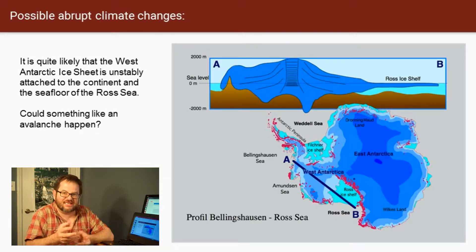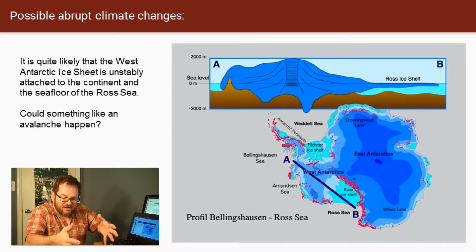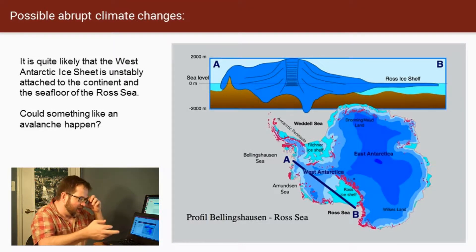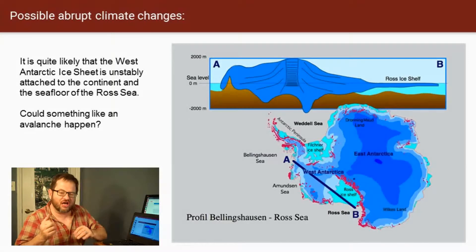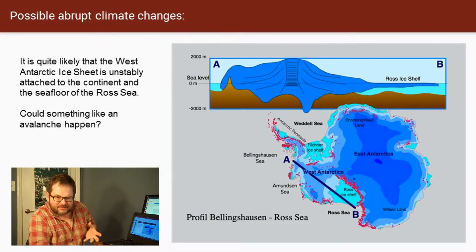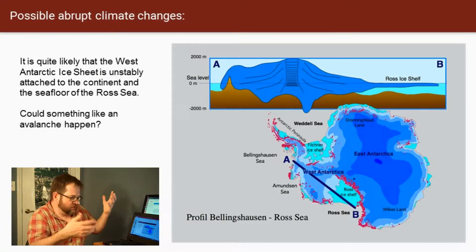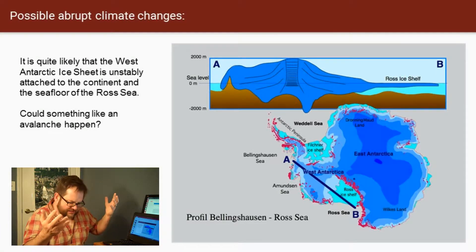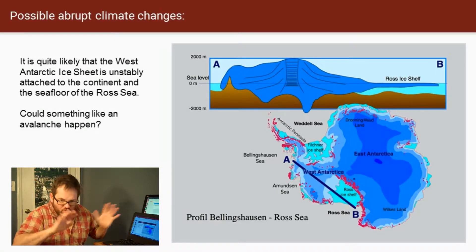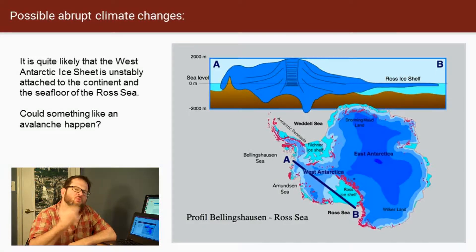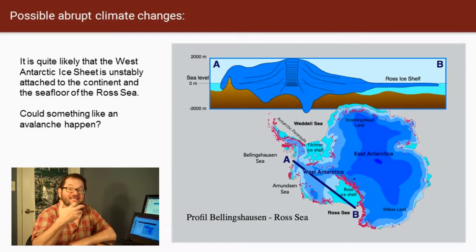People sometimes picture this as an avalanche waiting to happen. As this melting is happening, sooner or later the leading edge of the West Antarctic Ice Sheet comes unattached from that rock formation out over the Ross Sea, and the whole thing starts sliding. But don't picture this as a catastrophe where the ice sheets suddenly go chasing down into the ocean with a giant splash and a tidal wave.